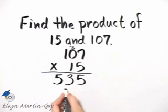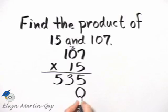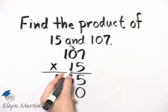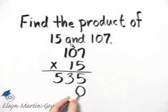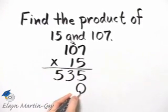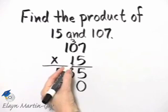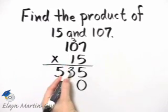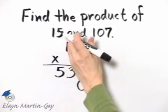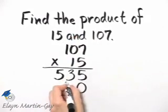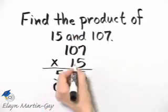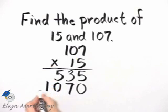Then remember we skip over, or we place a 0 here for a placeholder. And now we multiply. Essentially we're multiplying 10 times 107, but because I place this placeholder here, I'll think of it as 1 times 107. So let's remove this carry 3. And now 1 times 7 is 7, 1 times 0 is 0, and 1 times 1 is 1.